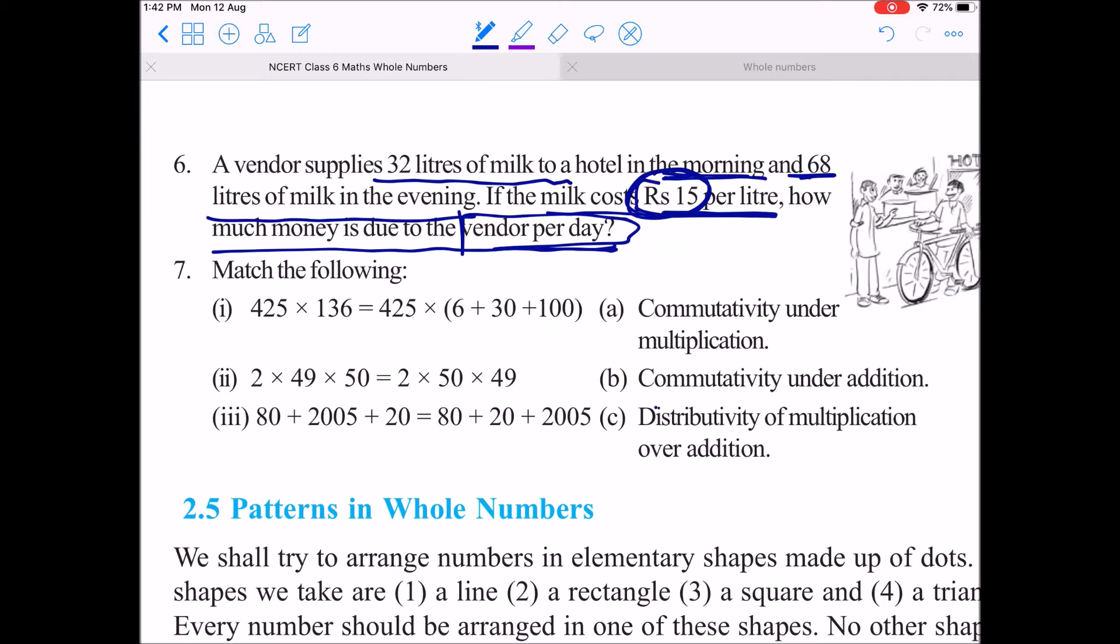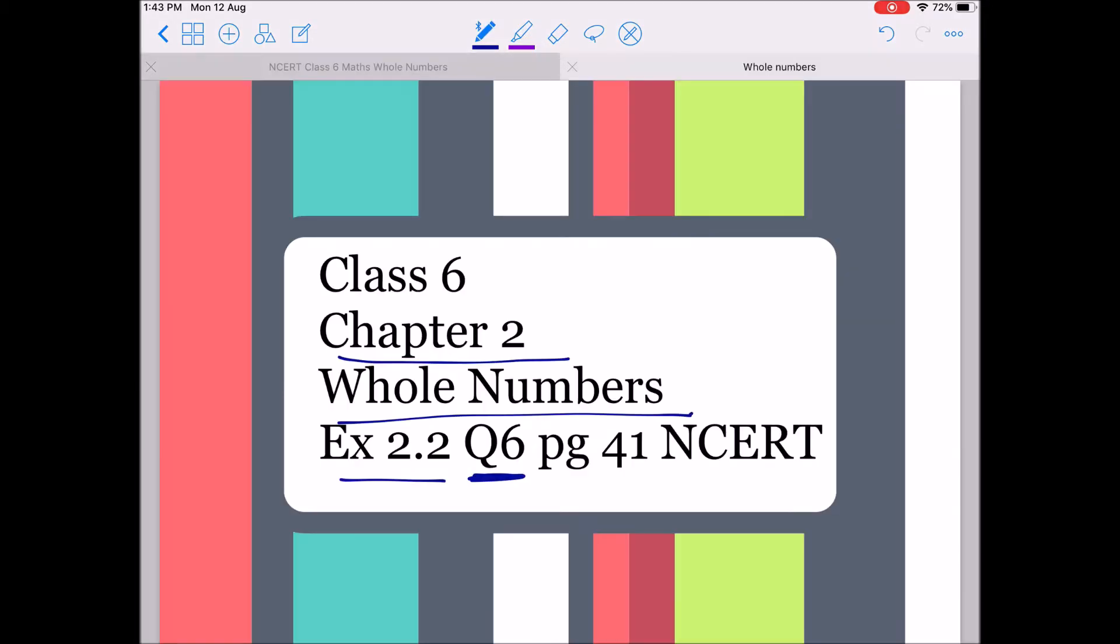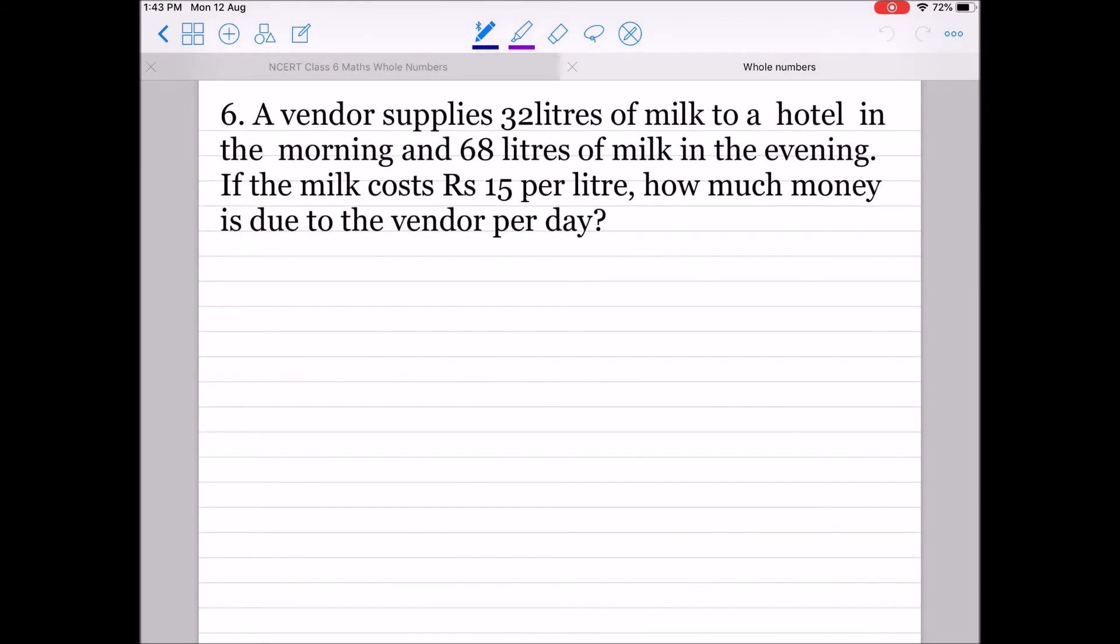It is Rs 15 per liter, that means for every quantity you will be multiplying 15 by that number. Just like if it is 1 liter of milk then it will be 15 rupees, if 2 liters then 30, if 3 then 45, and so on. So let's solve this question.